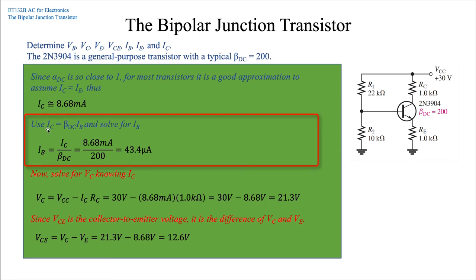Continuing, since we have that value now, we can use IC equals beta DC times IB and solve for IB. So solving for the base current, we have the collector current divided by beta DC: 8.68 milliamps divided by 200 gives us a current value for the base of 43.4 microamps.